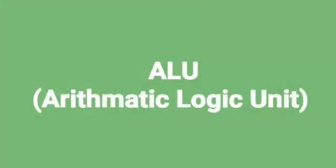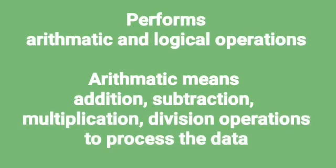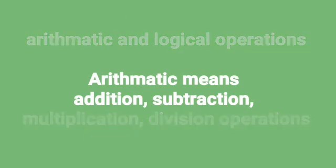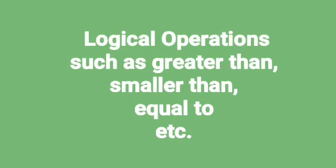Now let's look at the processing unit separately — what is the processing unit and how it processes the data by the help of different CPU components. The different CPU components are ALU, CU, and register. ALU means Arithmetic Logic Unit, which performs arithmetic calculations and logical operations.